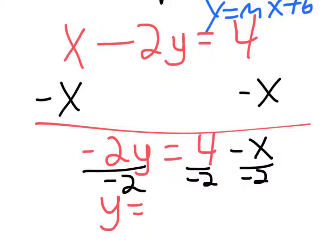4 divided by negative 2 gives us negative 2. Negative x divided by negative 2, that gives us a positive 1 half x. Because that's 1x divided by 2 there.